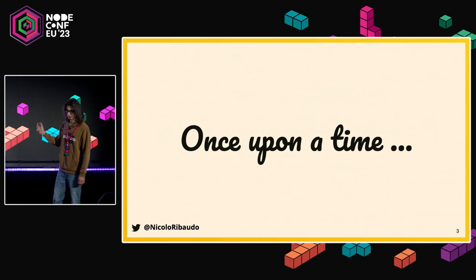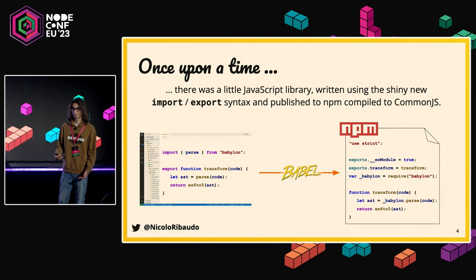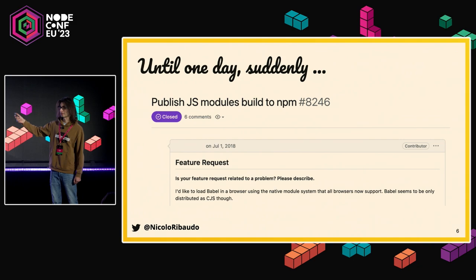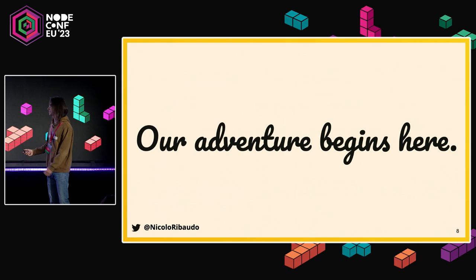This is a story that started long ago. Once upon a time, there was a library — which happens to be Babel, but that's just a detail. It was written as ESM, but not really ESM. We were just compiling to CommonJS, as most NPM packages written in ESM actually do. Everything was going fine until one day we started getting requests for this. It's fun to see this all started already in 2018, and at some point a core team member decided to actually do this migration, due to dependencies upgrading to ESM and wanting to use the new module system.